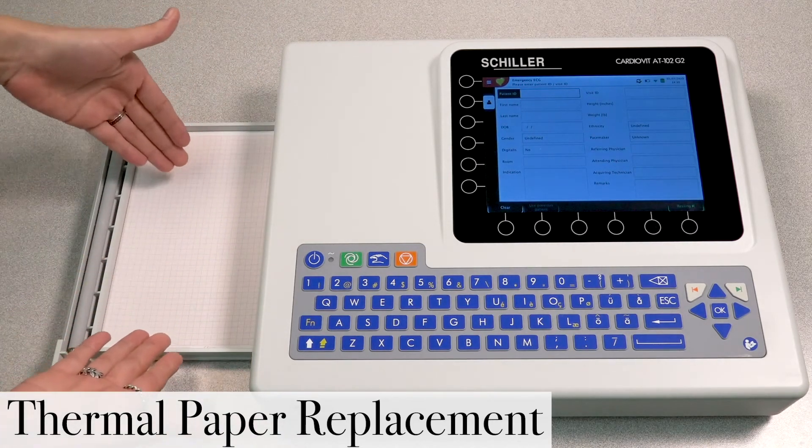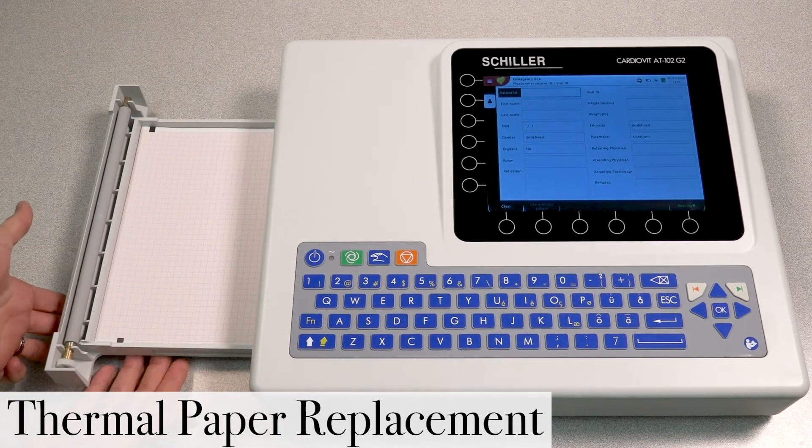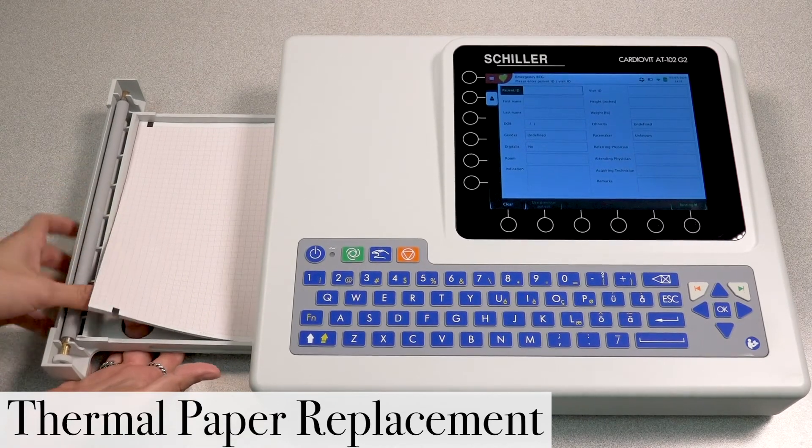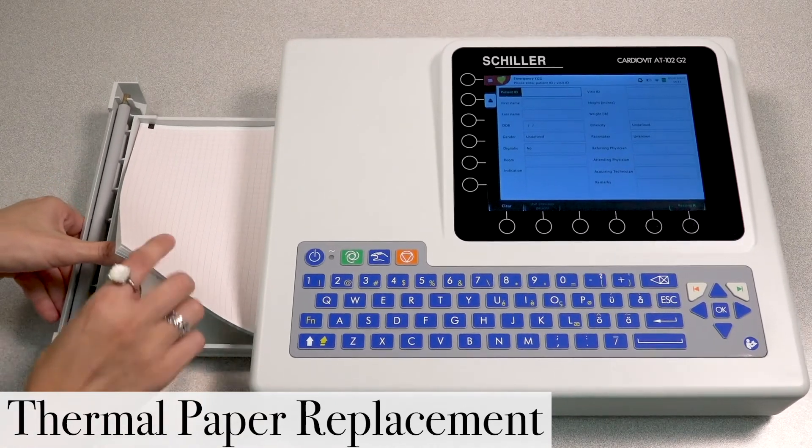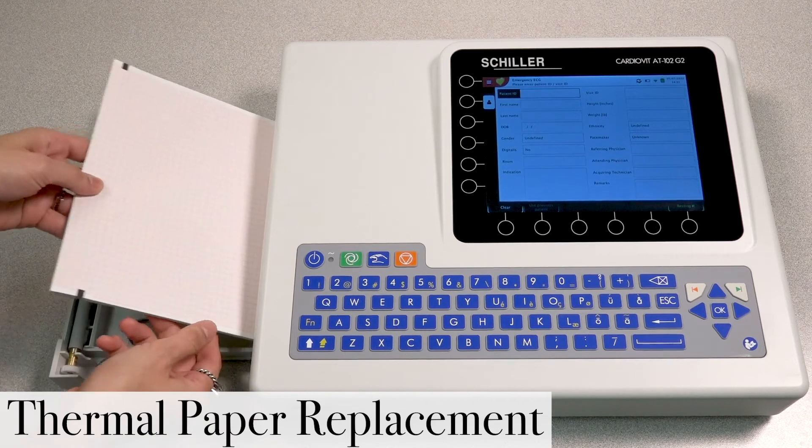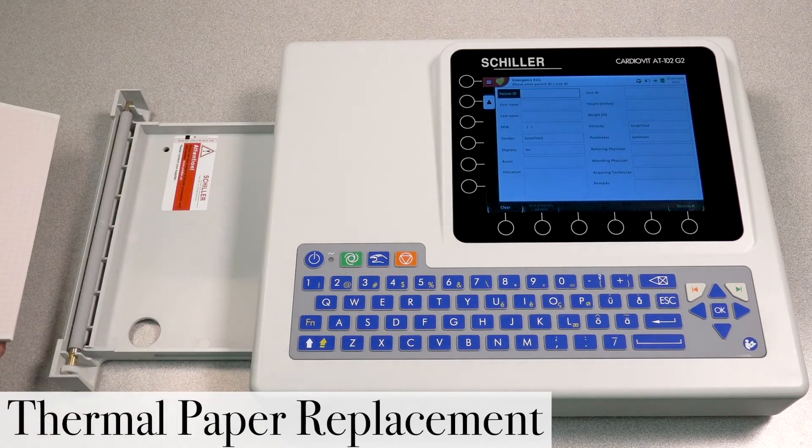That will release your paper tray as you see here. And inside, you'll find the paper. Now, underneath the paper tray, you do have a small circular gap in which you could use to help you remove the paper very smoothly.